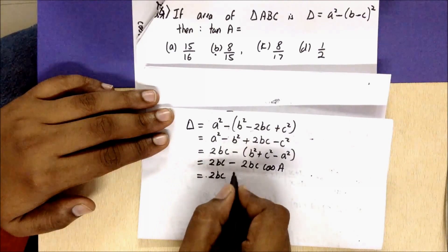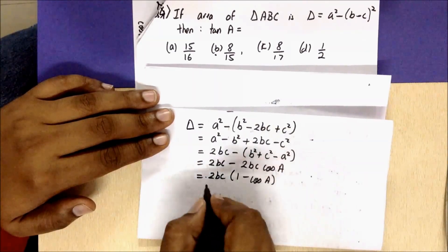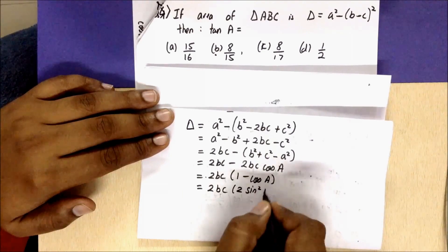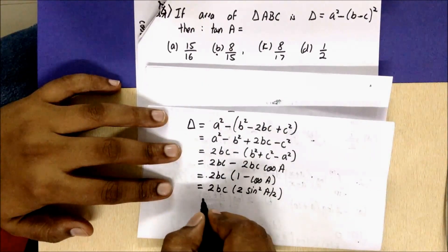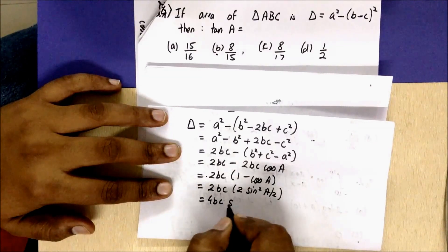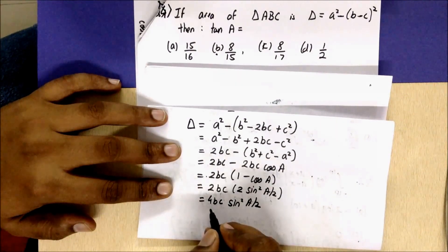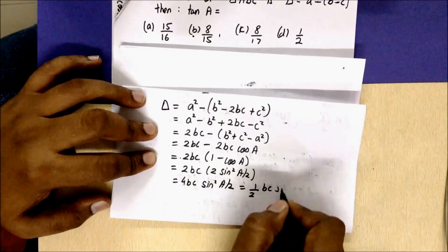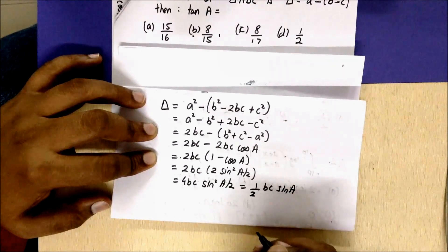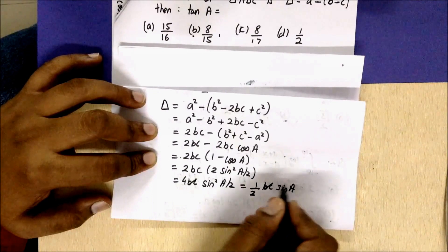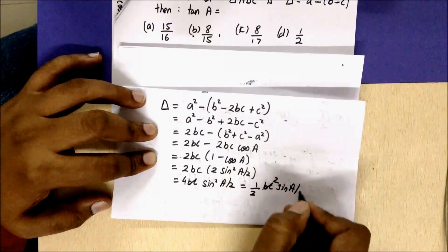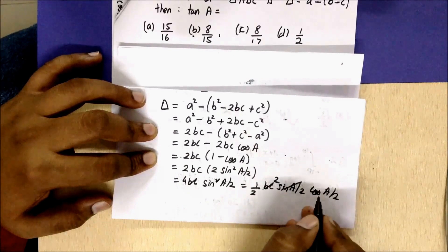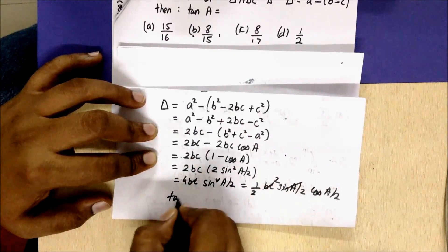Using the cosine rule, b² + c² − a² = 2bc·cos A. So the expression becomes 2bc − 2bc·cos A = 2bc(1 − cos A). Now 1 − cos A = 2sin²(A/2), so we get 4bc·sin²(A/2). The area of triangle is also (1/2)bc·sin A, so substituting and simplifying, bc cancels and sin A = 2sin(A/2)cos(A/2), giving one sin(A/2) cancelling.